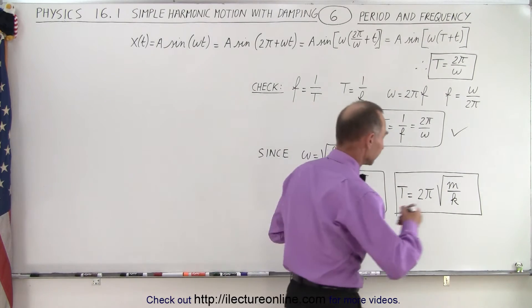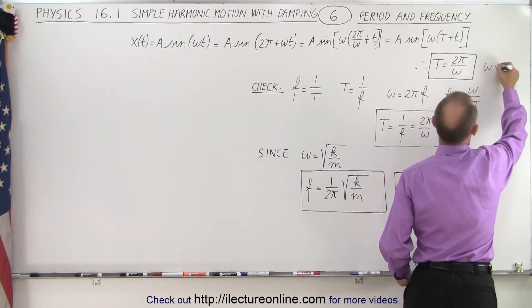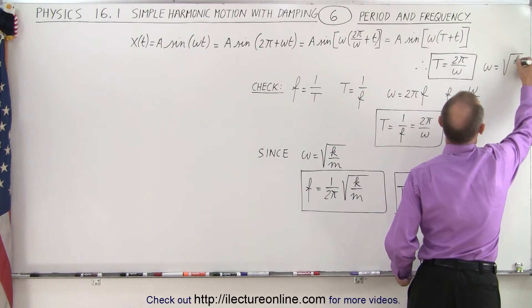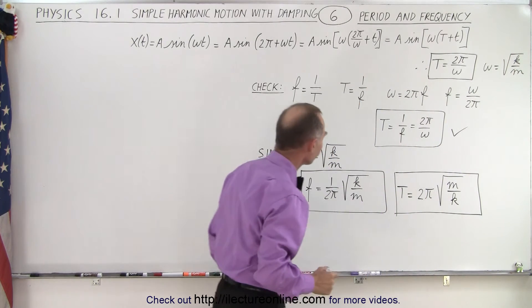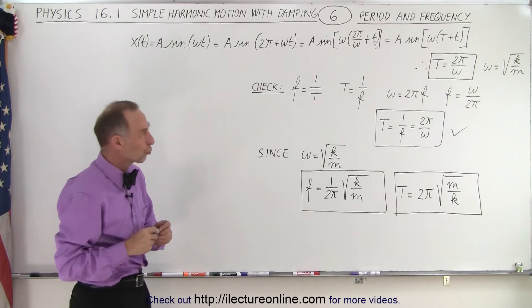Remember, omega is equal to the square root of k over m for an oscillating system. So we're going to check if that's true.